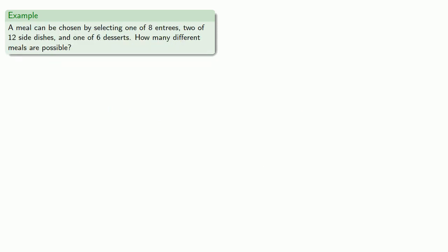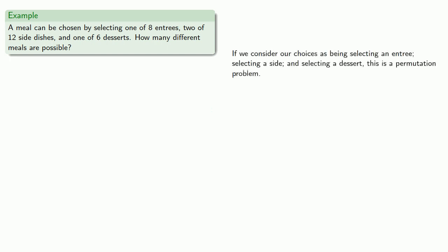There are formulas for computing the number of combinations, but in most cases those formulas are useless. So let's get lunch. We can get a meal by choosing one of eight entrees, two of 12 side dishes, and one of six desserts. How many different meals are possible? If we consider our choices as selecting an entree, selecting sides, and selecting a dessert, this is a permutation problem.